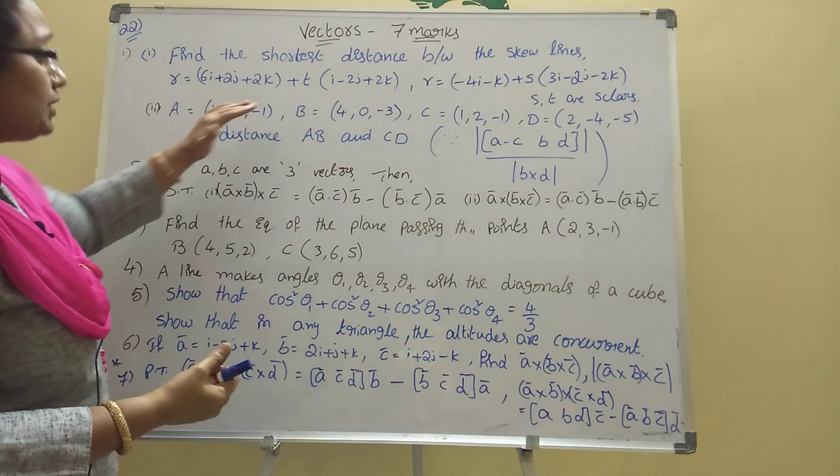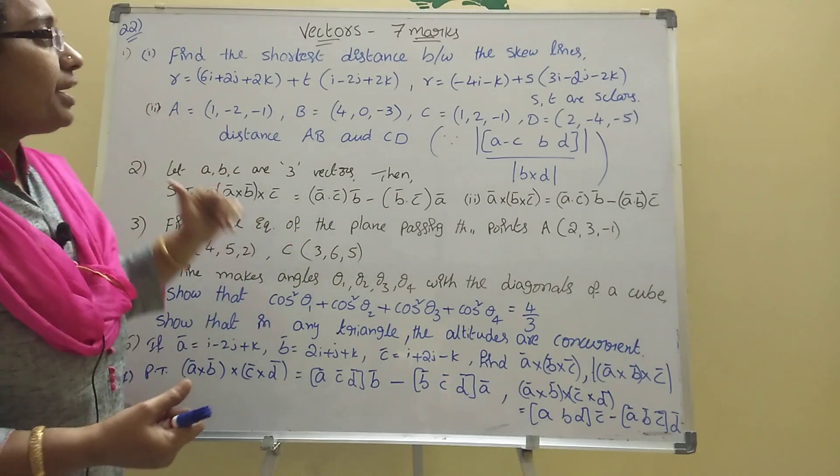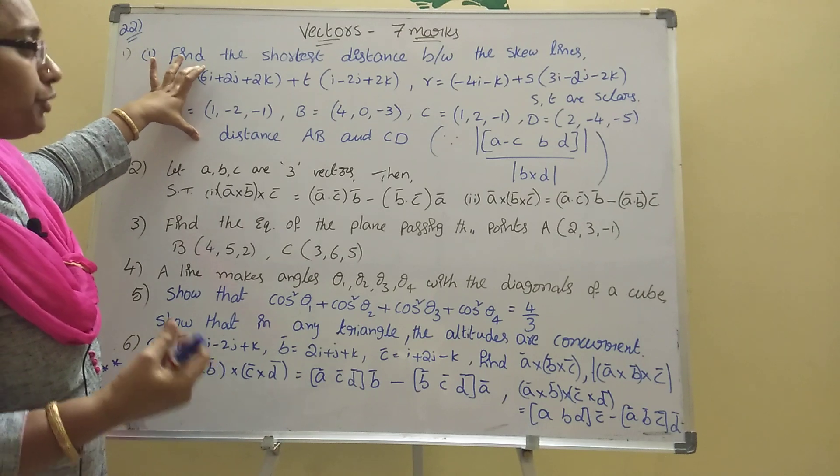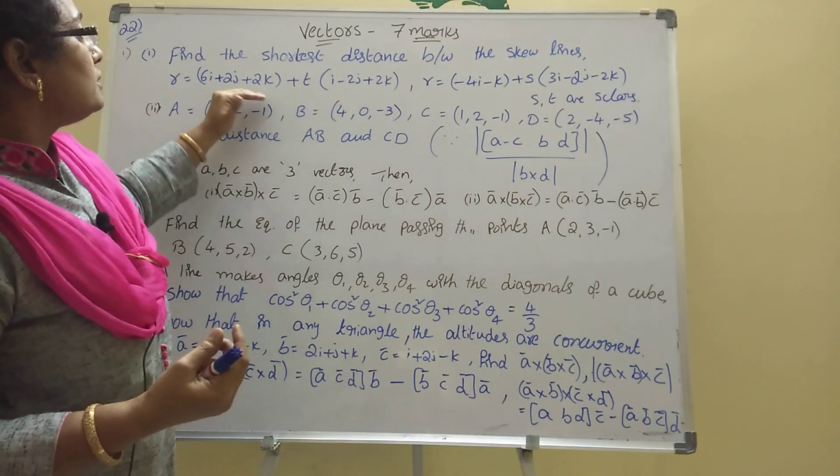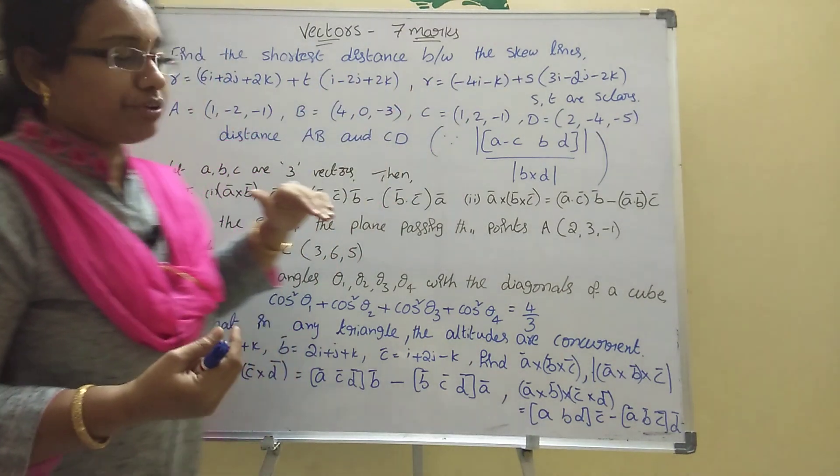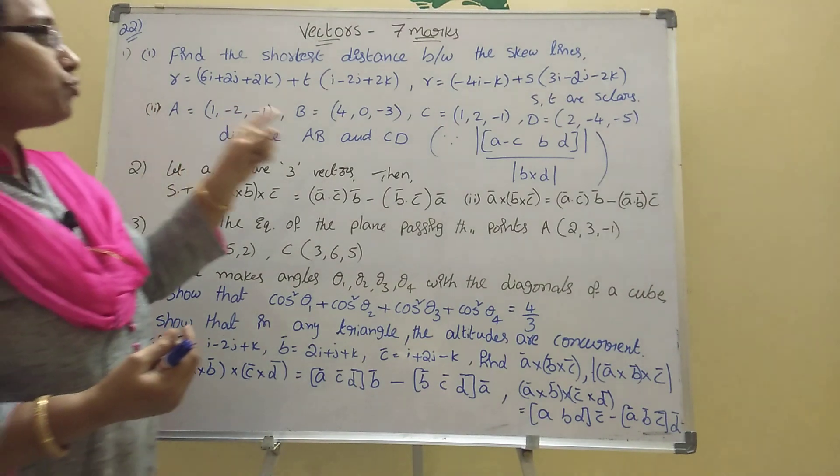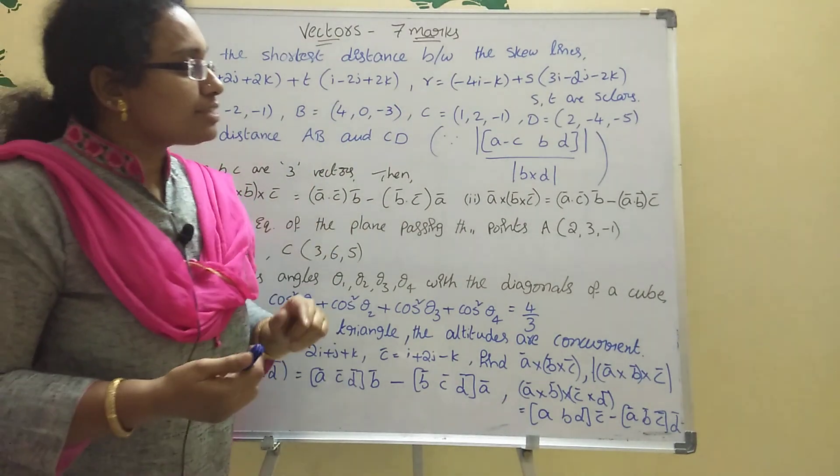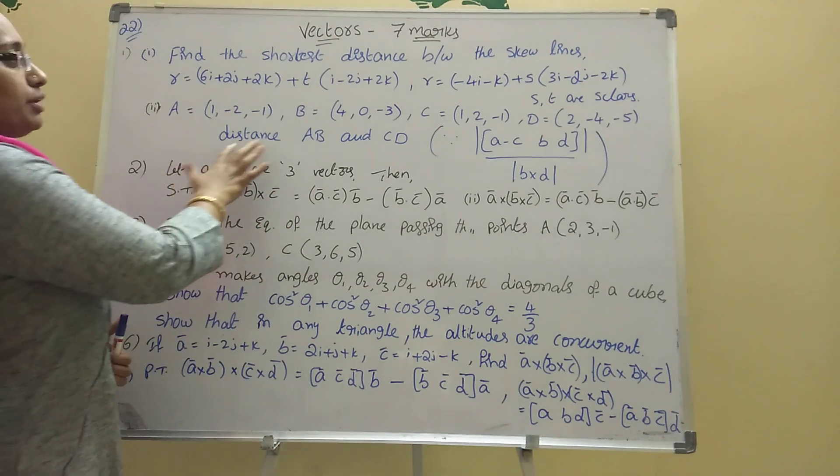Here two lines are given, should find shortest distance. Two models are there. In the first bit I wrote problem one and two, same model only. Here given like this: one, t of this, like that c + s of d. Another format: given a = (1, -2, -1), b = (4, 0, -3), c = (1, 2, -1), d = (2, -4, -5). Here four points are there, then find distance between them AB and CD.